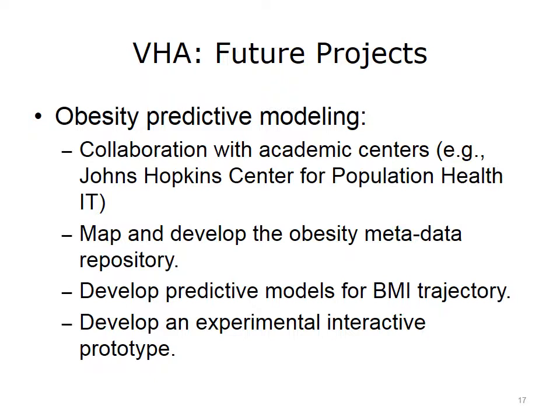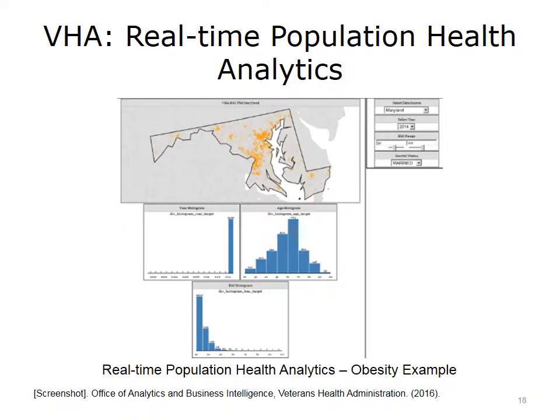This project has resulted in various modeling and data infrastructure outcomes, such as mapping and developing the obesity metadata repository, developing predictive models for body mass index trajectories, and developing an experimental interactive prototype. This screenshot shows a prototype of a real-time web-based population health analytics platform to analyze the trends of BMI in a given geographical area. The end user will be able to drill down into the overall population and find subgroups of interest in real time.